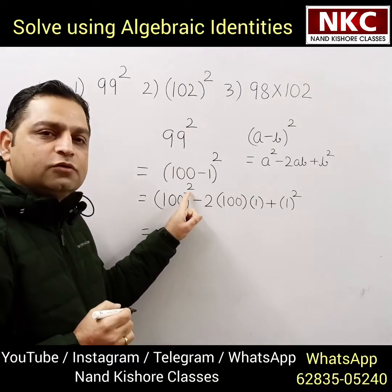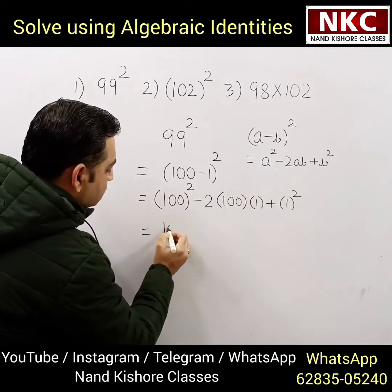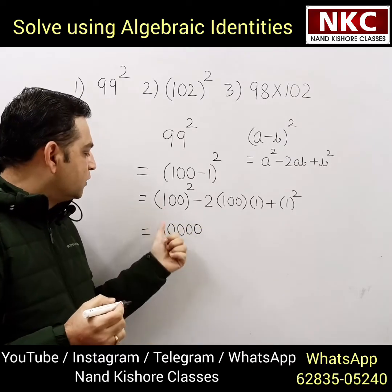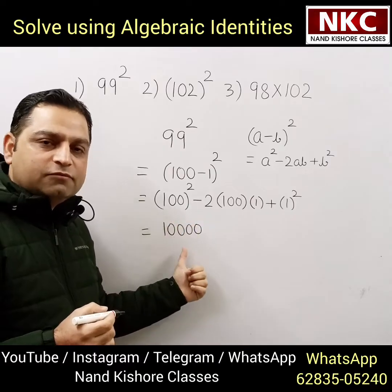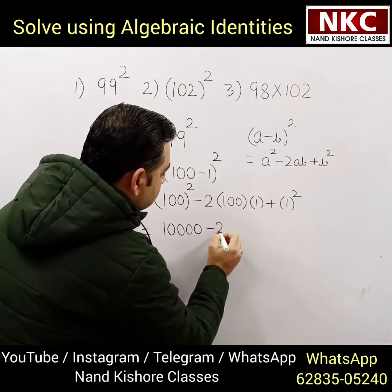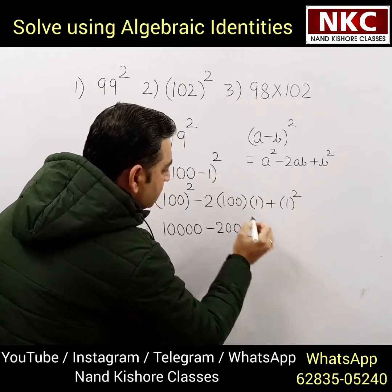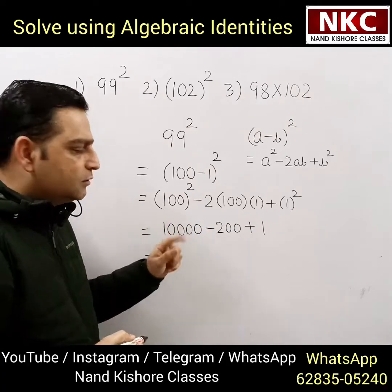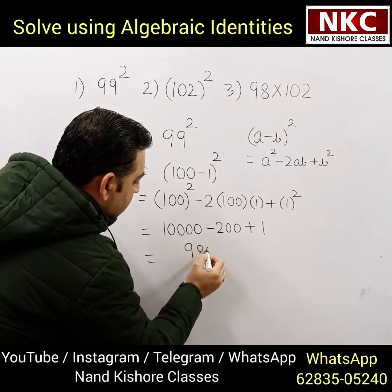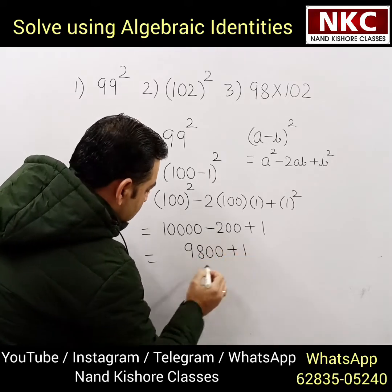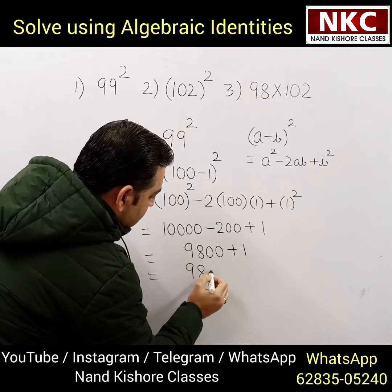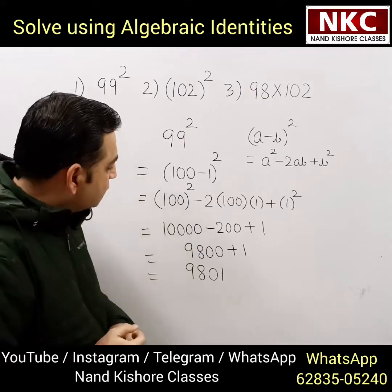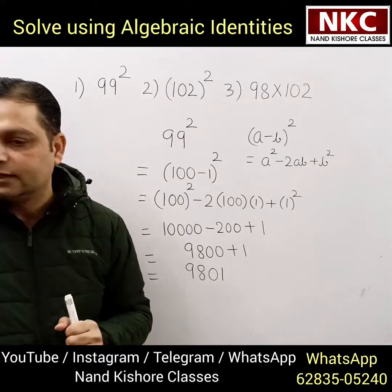Now it is a simple calculation, but sometimes students face problems here too. Remember: when a square is there, you just need to increase the zeros — the zeros will be doubled. So 100 square: there were 2 zeros, now it becomes 4 zeros, giving 10,000. Then minus 2 times 100 times 1 is minus 200, then plus 1 square which is 1. So 10,000 minus 200 is 9,800, and the final answer is 9,801. This is how using algebraic identity we can solve it.